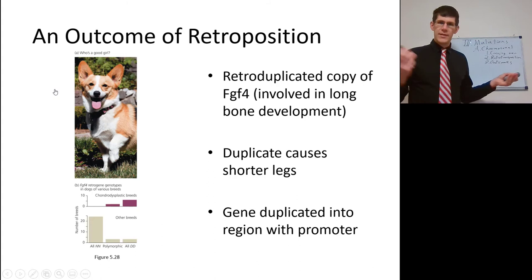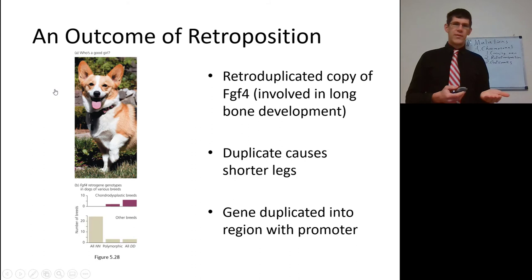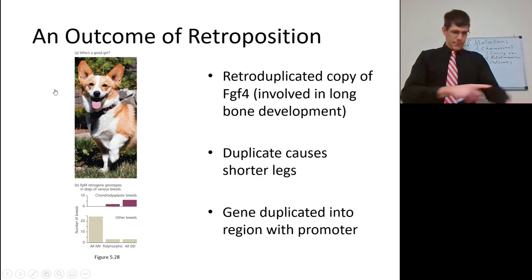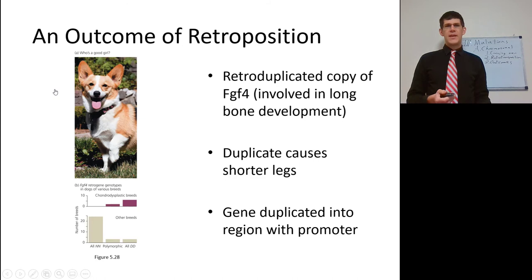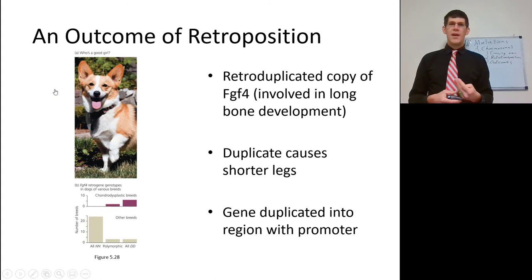Here's an example: a retro-duplicated copy of FGF4, which is involved in long bone development. Having two copies of FGF4 results in chondrodysplasia — giving individuals things like the short legs seen in corgis. The problem is the gene got duplicated into a region with a different promoter.